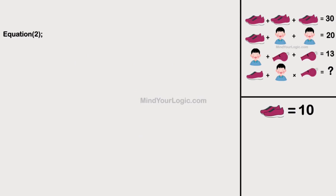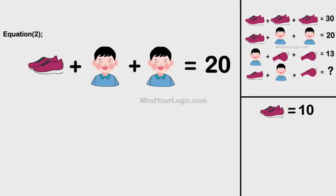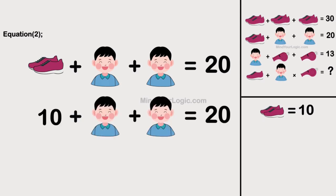Moving on to equation 2. Pair of shoes plus boy plus boy equals 20. Substitute the value of pair of shoes. We get the value of a boy as 5.